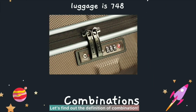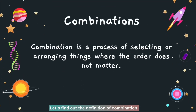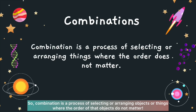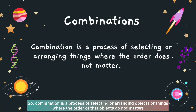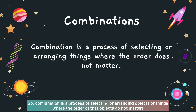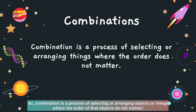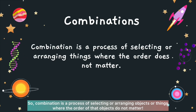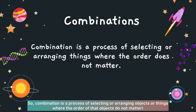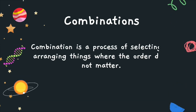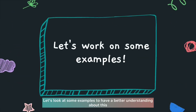Let's find out the definition of combination. Combination is a process of selecting or arranging objects or things where the order of those objects does not matter. Let's take a look at some examples to have a better understanding about this.